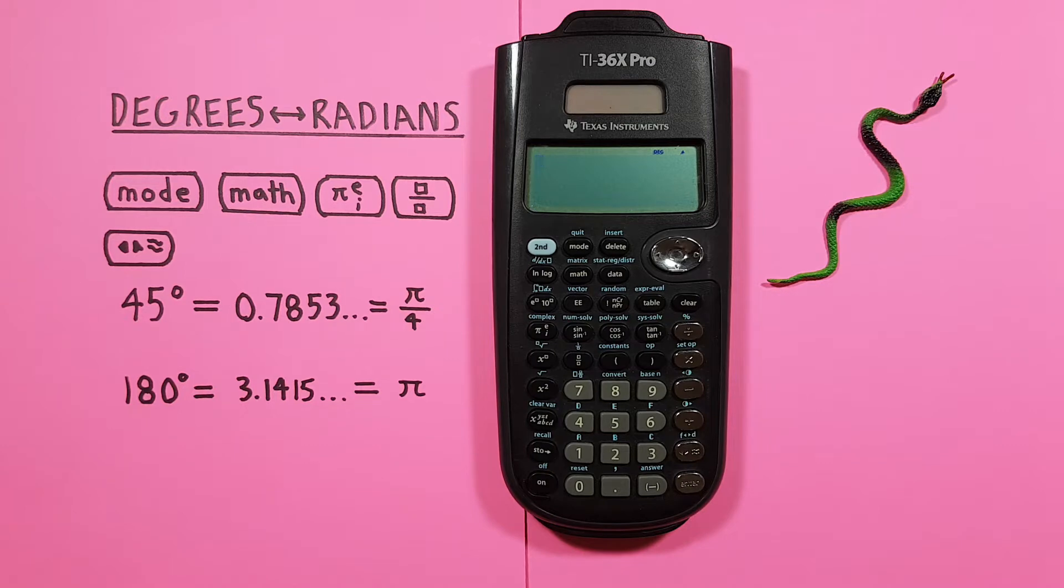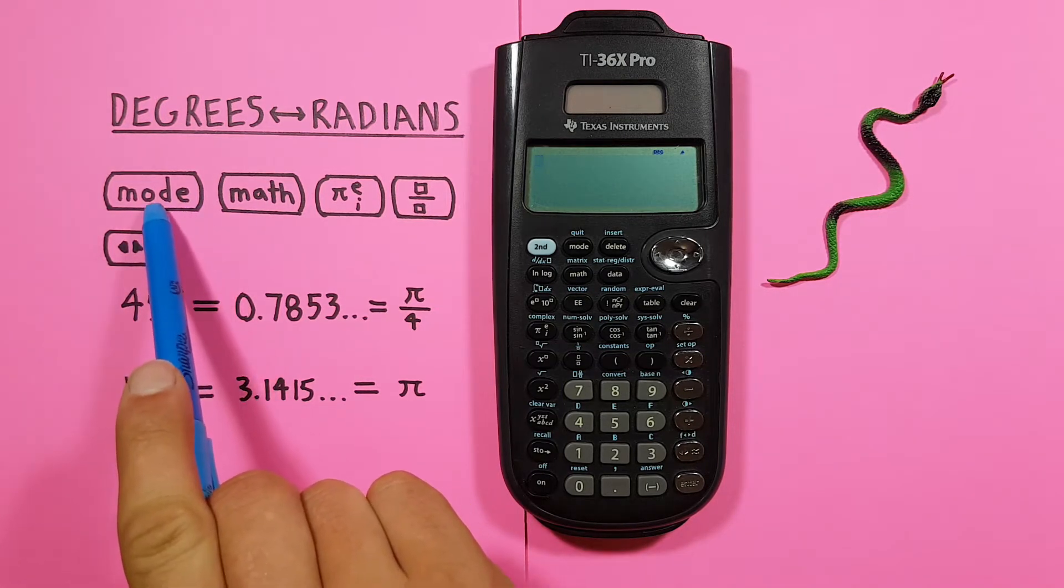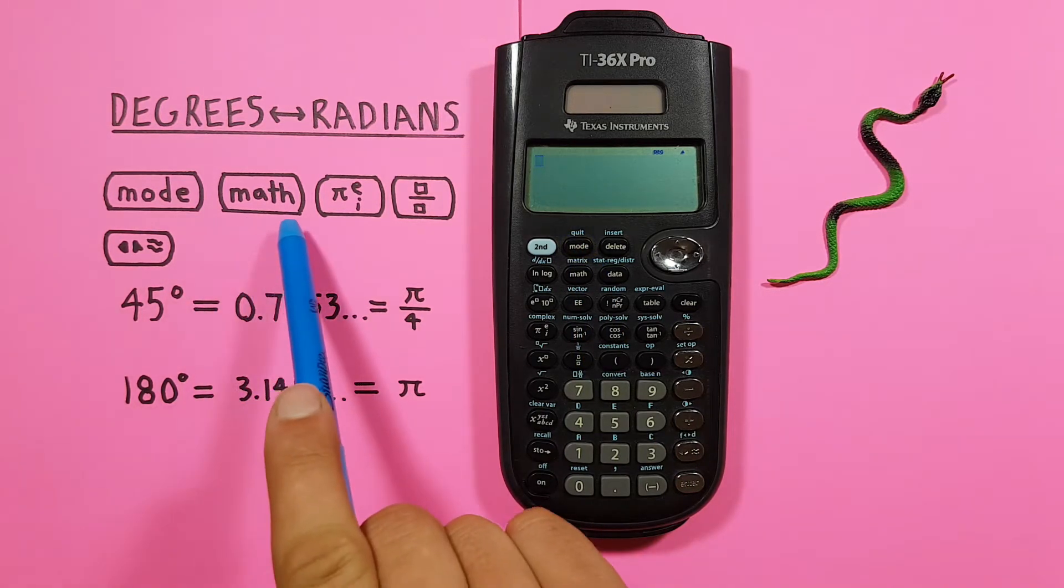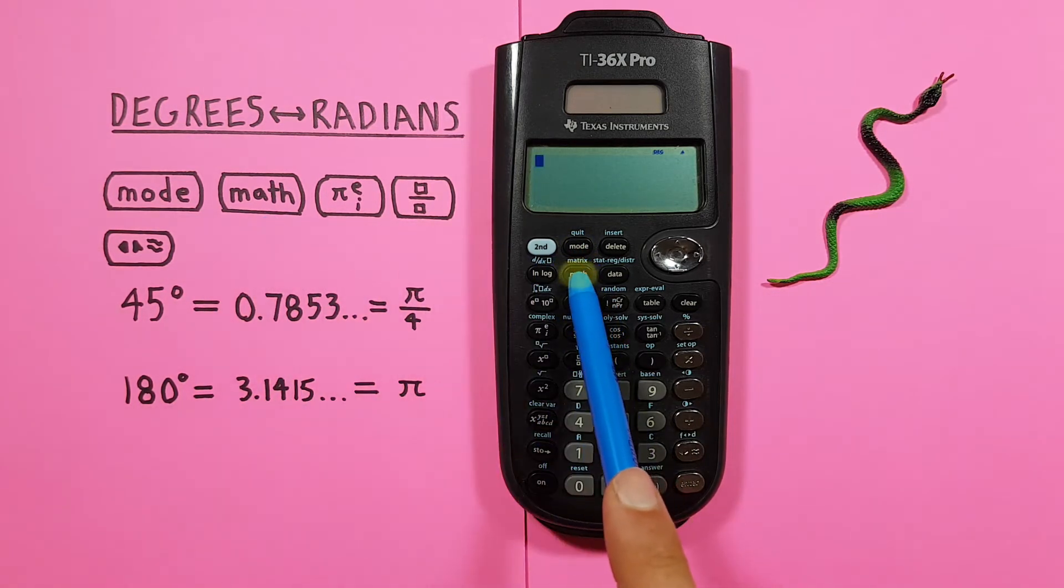To do this we'll use the Mode key that looks like this located here. The Math key that looks like this located here.